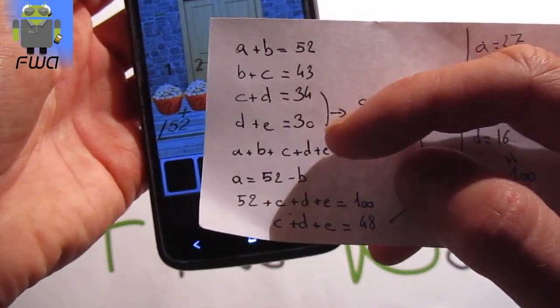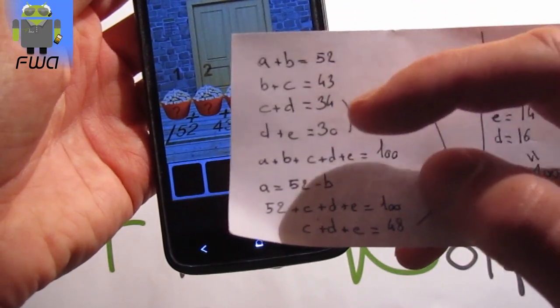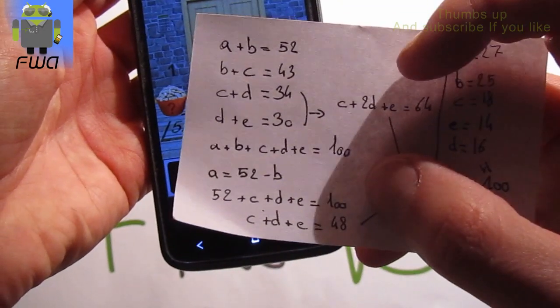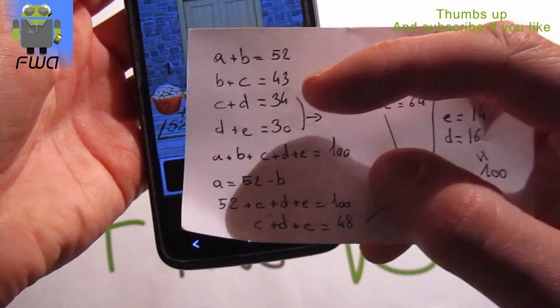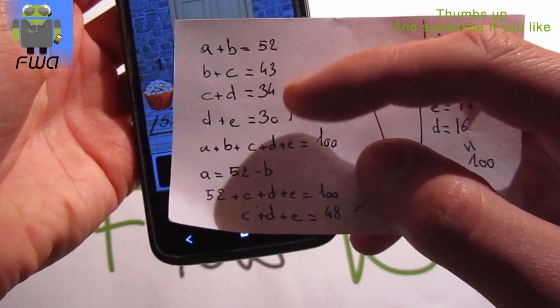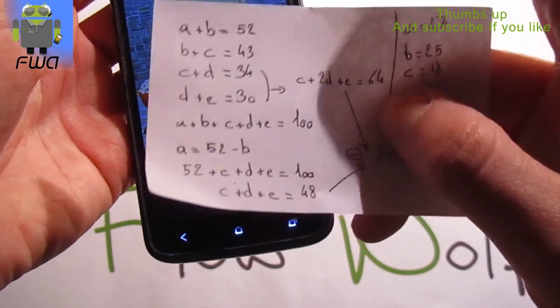With those two different lines we get c plus g plus g plus e equals c plus 2g plus e equals 44... 34 plus 30. So this is 64.